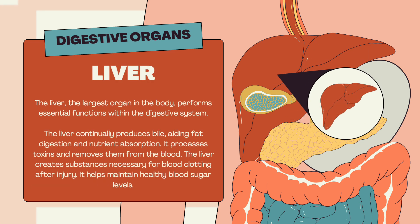The liver, the largest organ in the body, performs essential functions within the digestive system. The liver continually produces bile, aiding fat digestion and nutrient absorption. It processes toxins and removes them from the blood. The liver also creates substances necessary for blood clotting after injury and helps maintain healthy blood sugar levels.